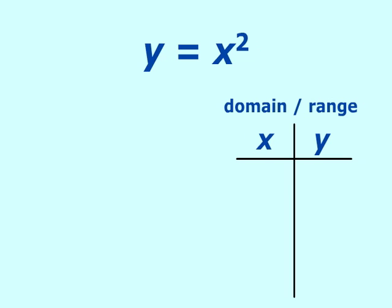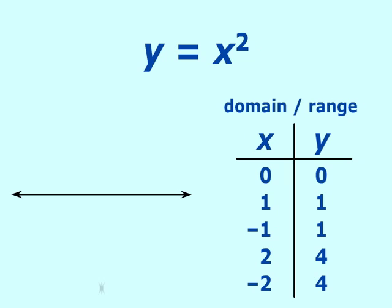And we substitute values for x, and then we compute the values for y. And some of the values we will substitute for x are 0, 1, negative 1, 2, and negative 2. If we substitute in 0 for x, of course we get 0. If we substitute a 1 in for x and square it, we get 1. If we substitute negative 1 for x and square it, we get positive 1. If we substitute 2 in for x, we get 4. And if we substitute negative 2 and square it, we get another positive 4.